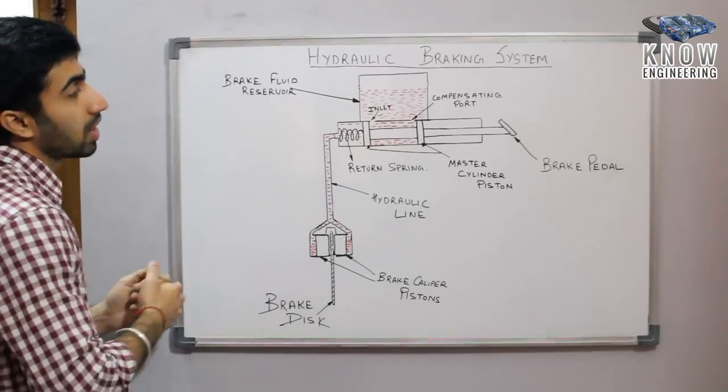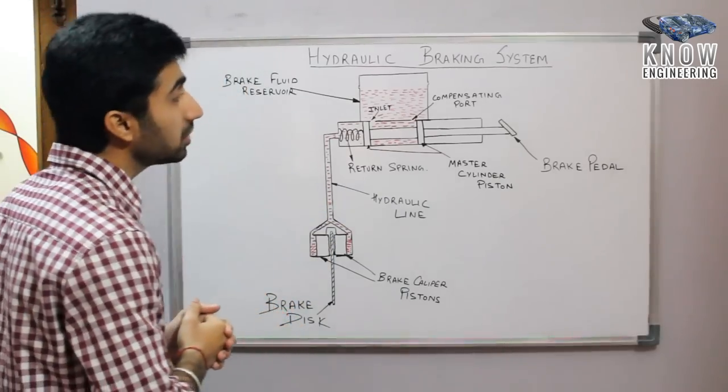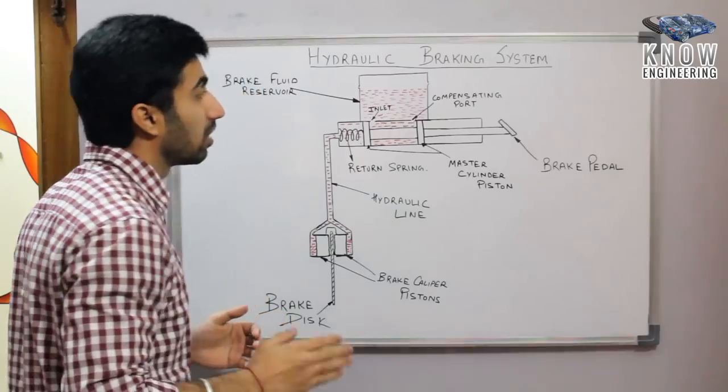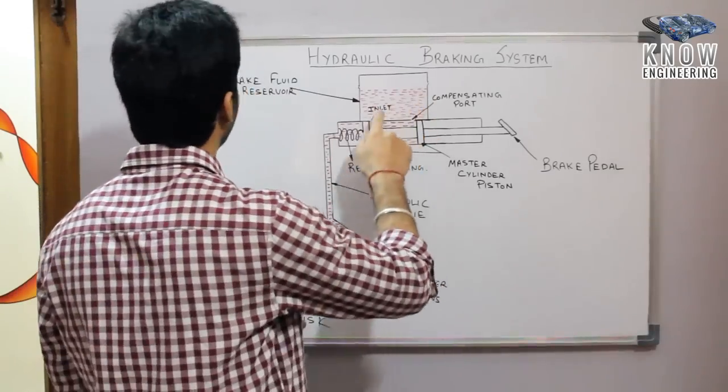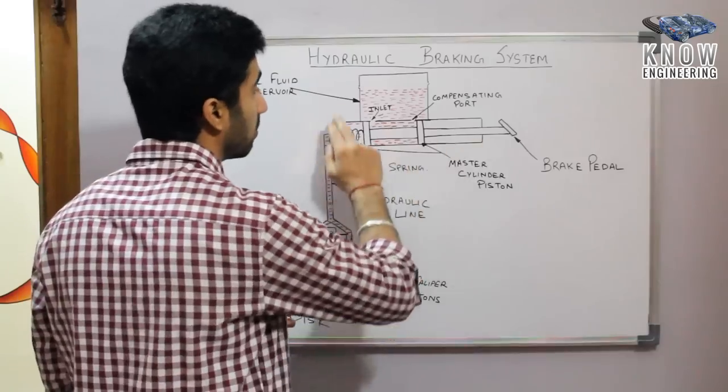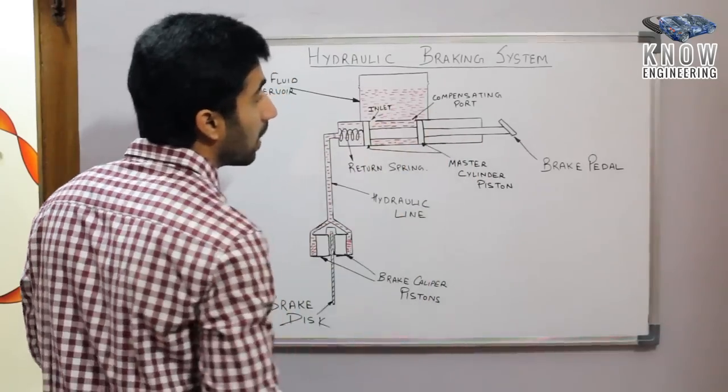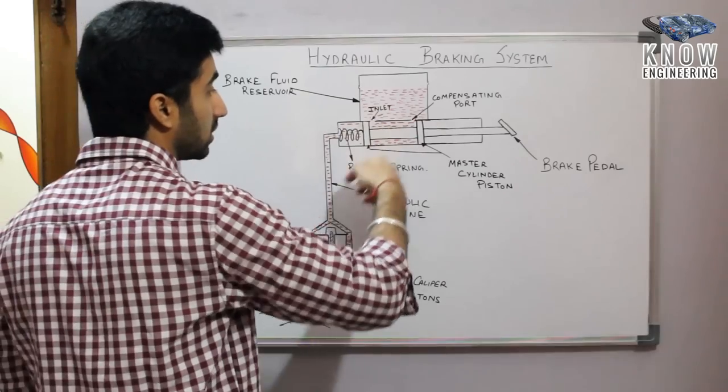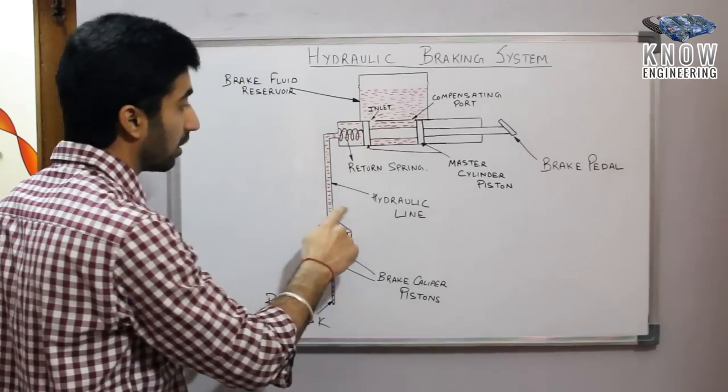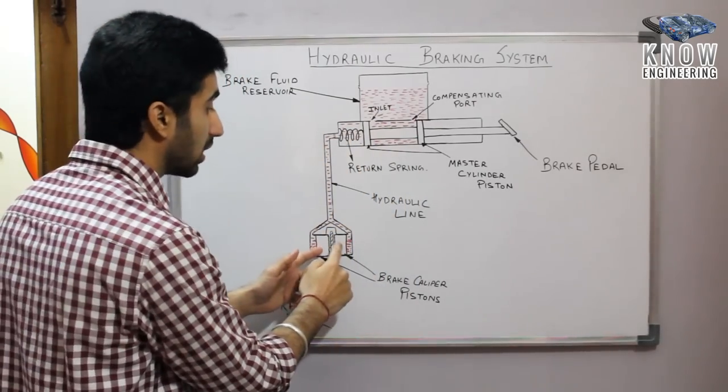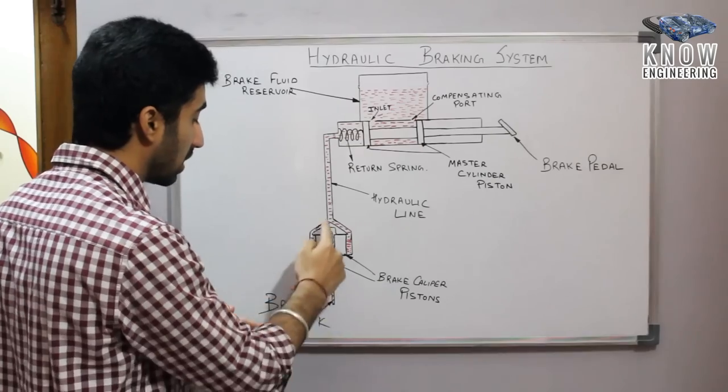So let me explain the diagram first. This is a brake pedal which you press with your foot. This is the brake fluid reservoir. This is the master cylinder. This is the piston. This is a return spring. This is the hydraulic line. And these are the brake caliper pistons. This is a brake disc.